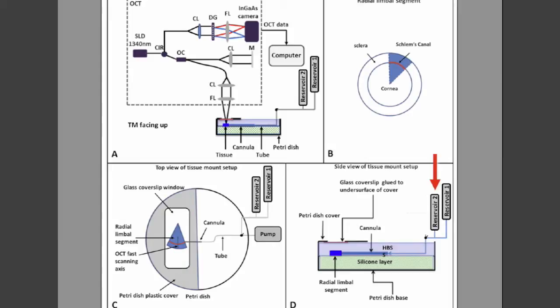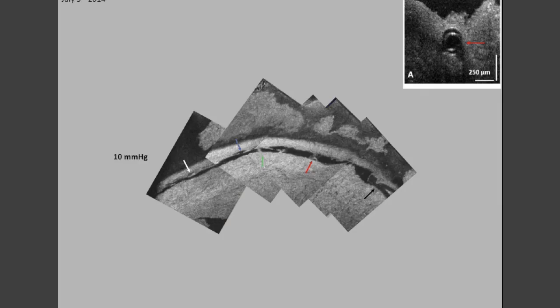The reservoirs attached to the perfusion cannula permit controlling pressure within Schlemm's canal, and also by changing reservoirs we can rapidly change pressure gradients and watch trabecular meshwork motion.